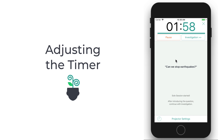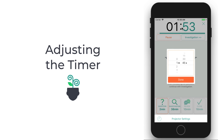During facilitation, you can change the time for a particular phase by tapping on the timer and using this menu to change the time.